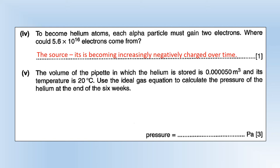The volume of the pipette in which the helium is stored is 0.000050 meters cubed and its temperature is 20 degrees. Use the ideal gas equation to calculate the pressure of helium at the end of the six weeks. We can use this equation, we know n, we know R, we know T, and we know V. As long as we convert temperature to Kelvin we can get the pressure is 2.3 pascals, which is incidentally a very very small pressure especially compared to atmospheric pressure which is 10 to the power of 5.